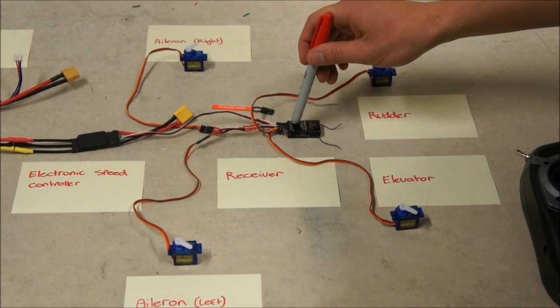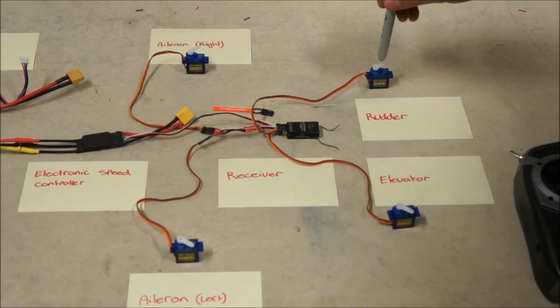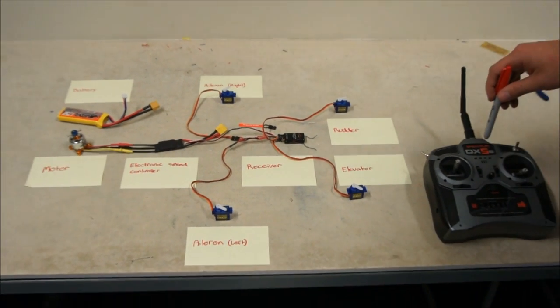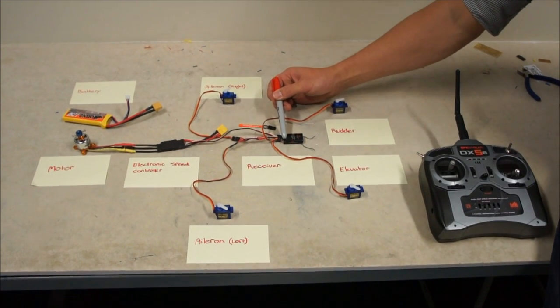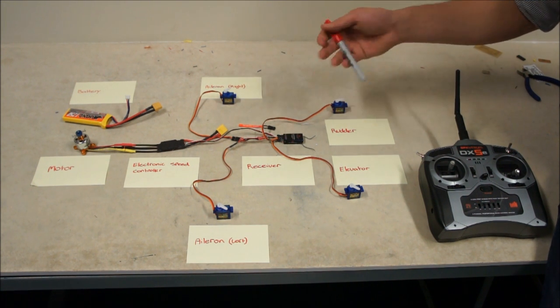From the receiver, I've got an aileron channel and that's going to two servos. So one, two. If you had a six channel receiver, you can use the auxiliary. So the auxiliary port on this receiver, you could set up for an extra servo.